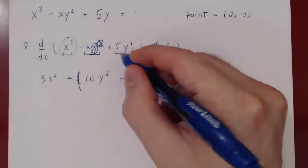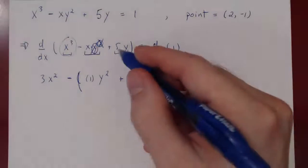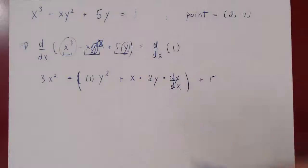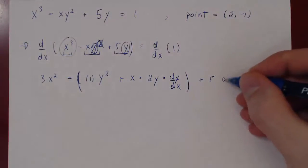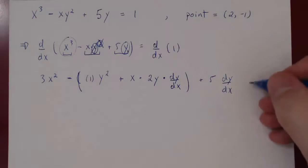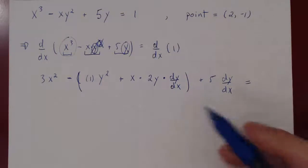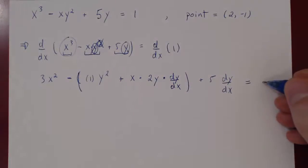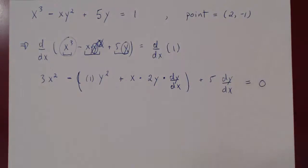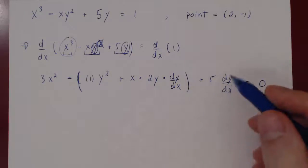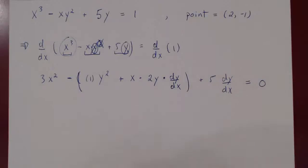Plus the derivative of 5y: 5 is a constant multiple, so it stays, times the derivative of y with respect to x — that is dy over dx. This equals the derivative of 1 with respect to x, which is 0 since 1 is a constant. Now we have differentiated, and there is a dy over dx in two places, so we need to regroup.